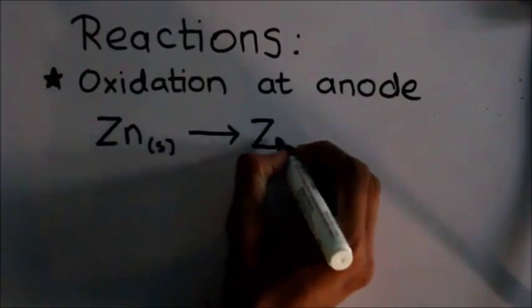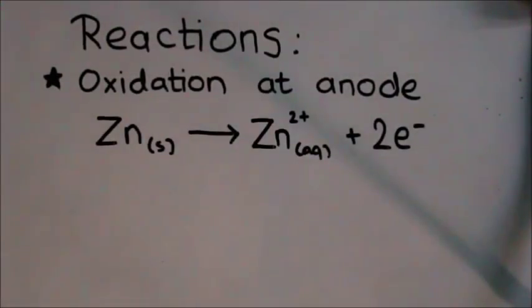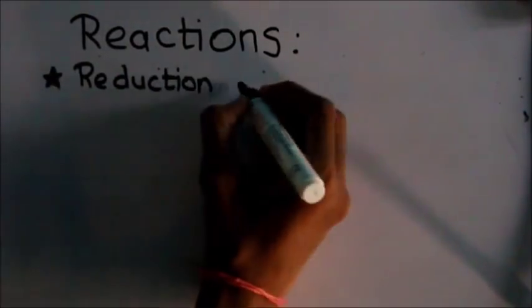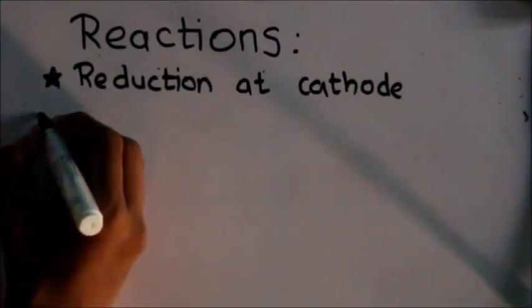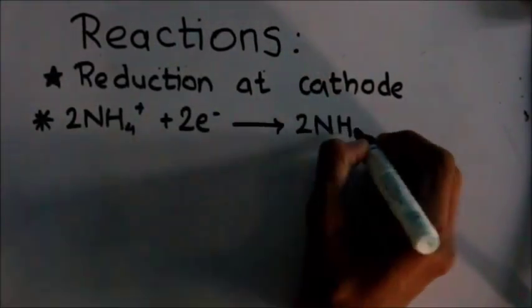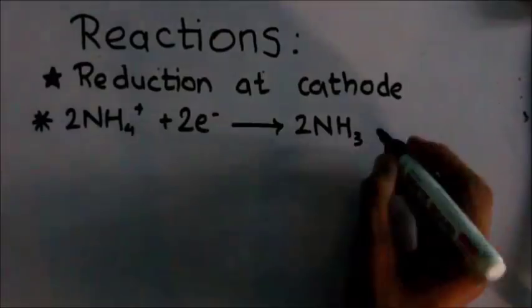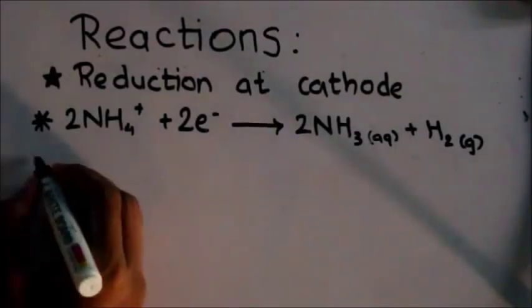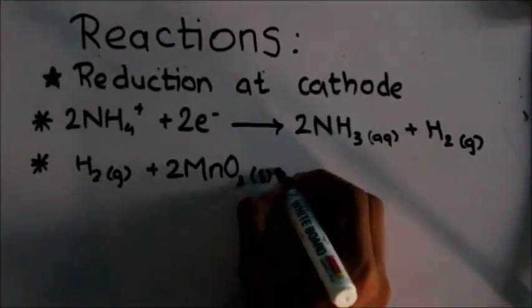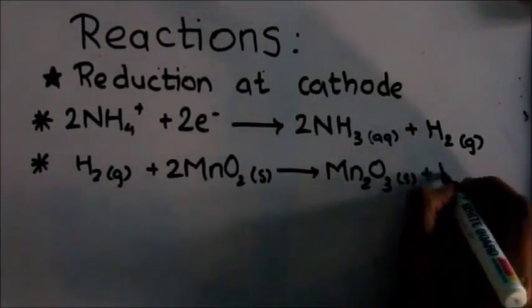The reduction reaction takes place at the cathode. There are two reduction reactions. First is 2NH4⁺ + 2e⁻ → 2NH3(aq) + H2(g). The hydrogen gas reacts with 2MnO2(s) to give Mn2O3(s) + H2O(s).